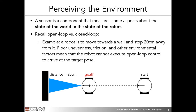How do robots perceive the environment? A sensor is a component that measures some aspect about the state of the world or the state of the robot. The state of the world could be the position of a given object, while the state of the robot could be its own position in a global coordinate frame. The state can also be non-geometric — for example, a robot could try to infer the intention of another agent.